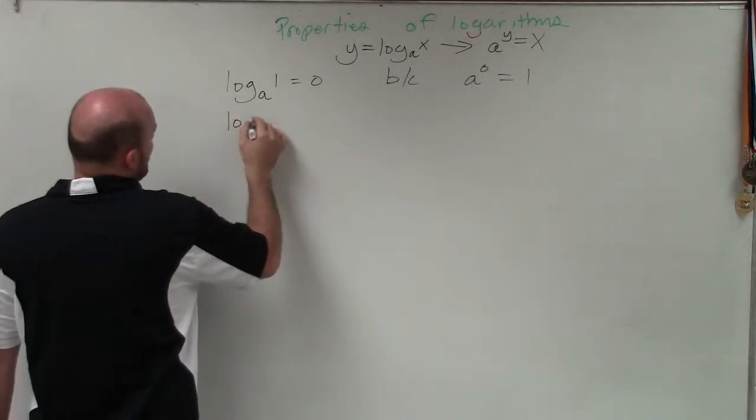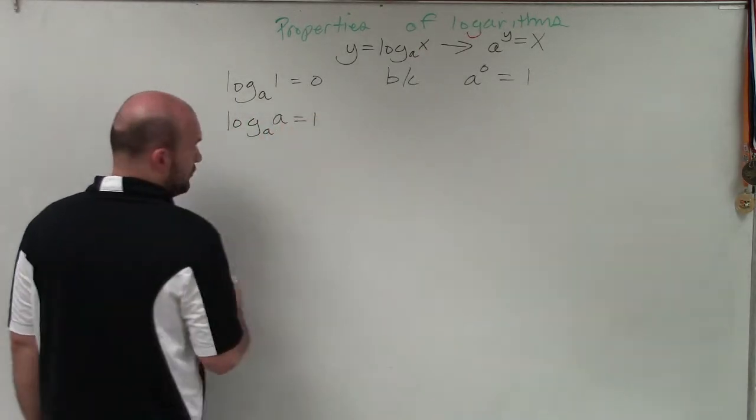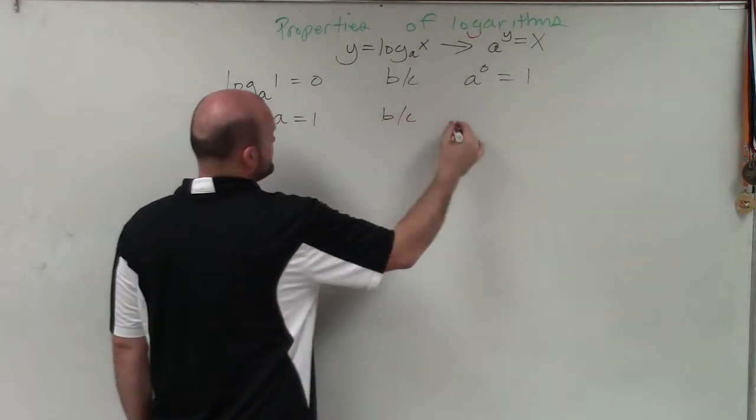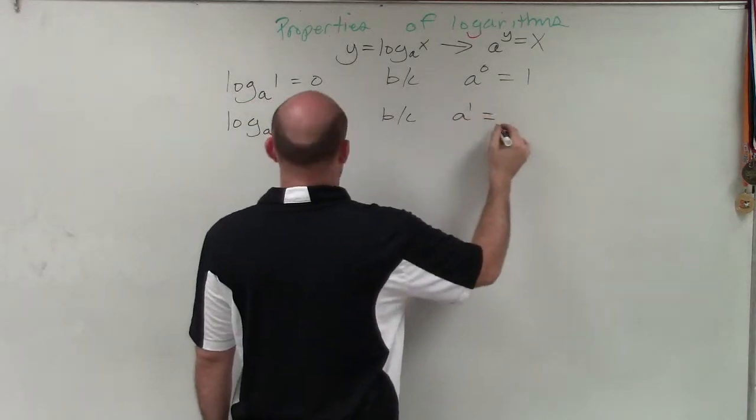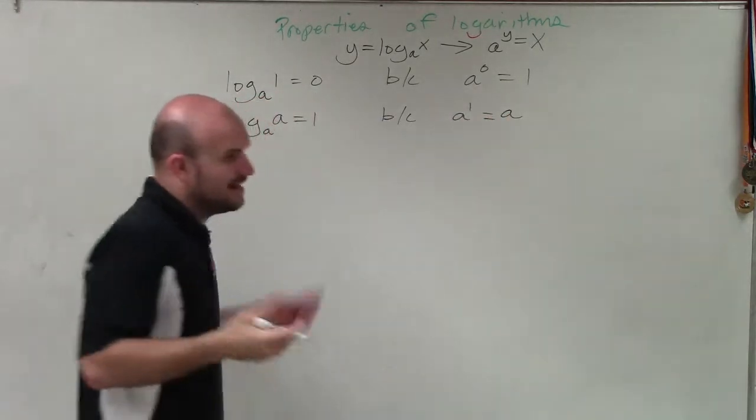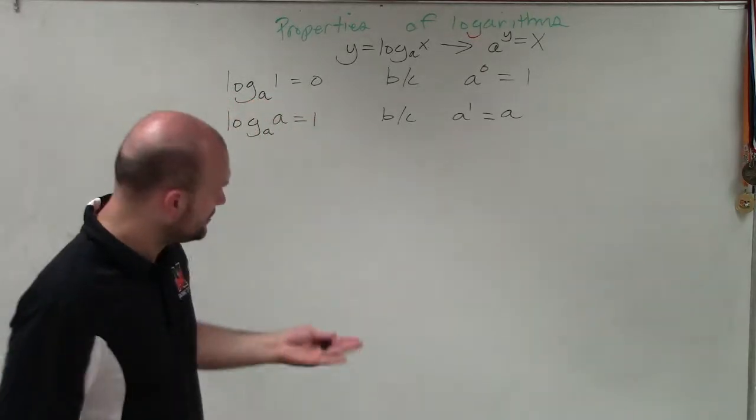The next property is log base a of a is going to equal to 1. Again, that works because a raised to the first power just simply equals a. Obviously, a is always raised to the first power, so they're going to equal each other.